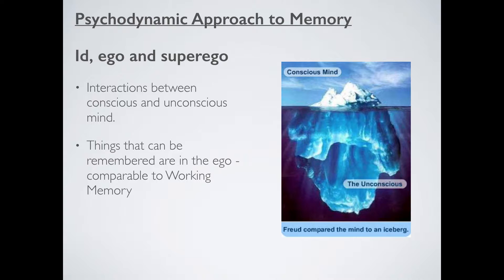The id and the superego are your unconscious mind — the little devil and the little angel on your shoulder respectively, fighting over what kind of behaviour you exhibit. In terms of memory, Freud would argue that things you can actively remember are stored in the ego, in the conscious mind. He hasn't got very much to tell us about how they are stored. He just reckons memories you consciously think about — how to ride a bike or what you had for dinner last night — are stored in the ego. We can compare this a bit to working memory: you can manipulate, store, and retrieve these memories. That's your conscious mind.